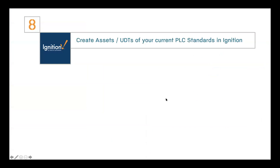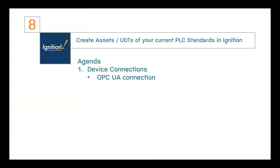Here's a little agenda of what we're going to cover. To get data into a SCADA platform we need to connect to devices. The example I have is a Siemens S7-1500 PLC. There are two ways to communicate with it: the PLC has an OPC UA server on board, so I'll show you how to connect via OPC UA, and we'll also look at the standard built-in drivers that Ignition offers — connecting to the Siemens with the built-in TCP driver.